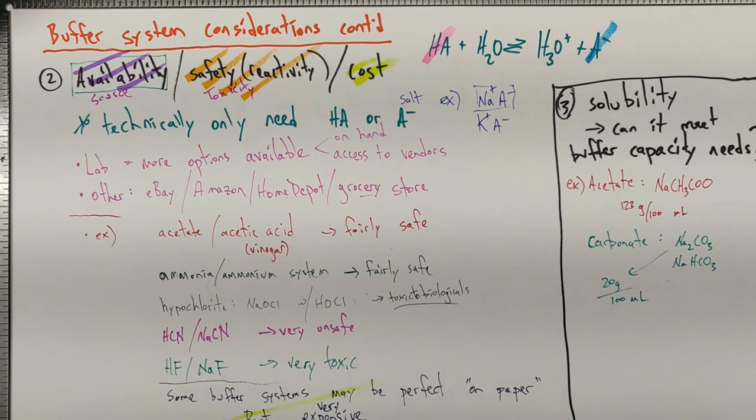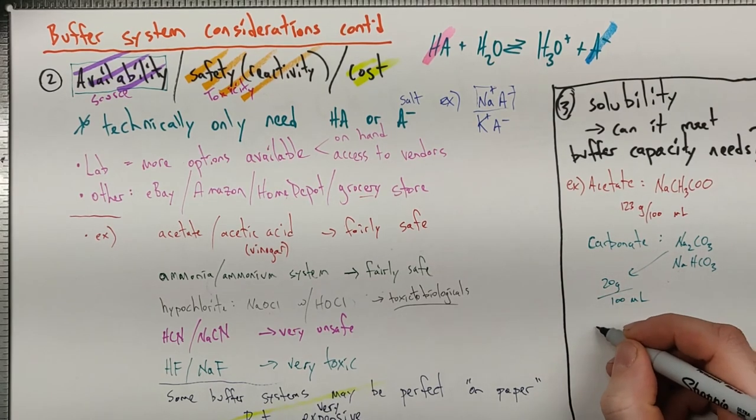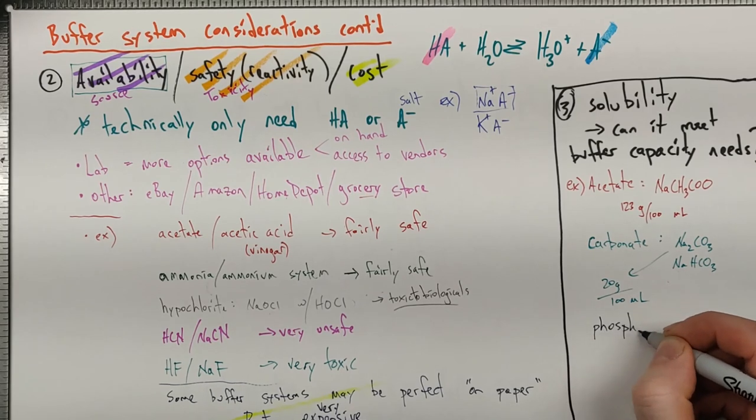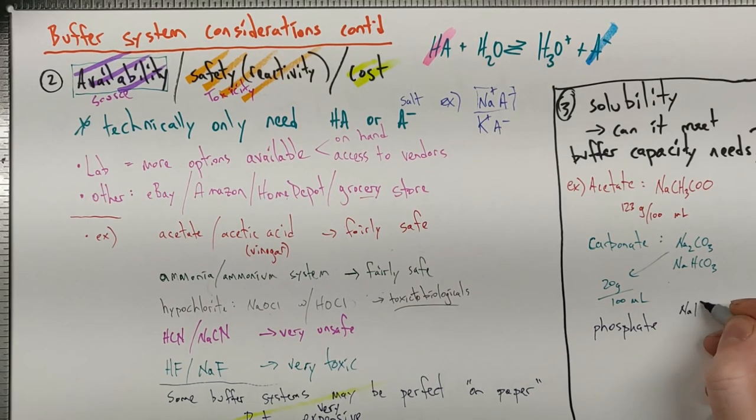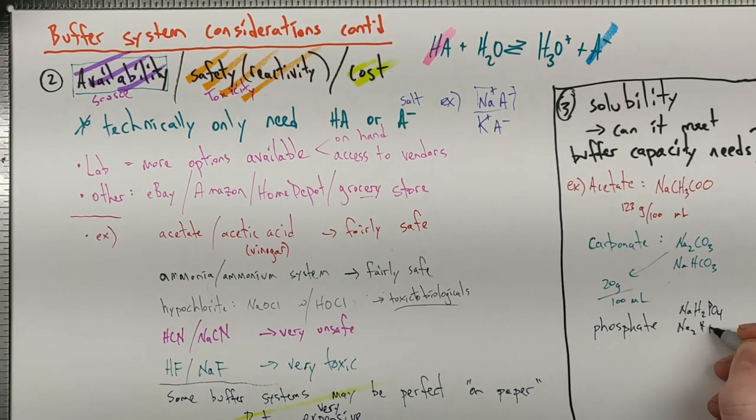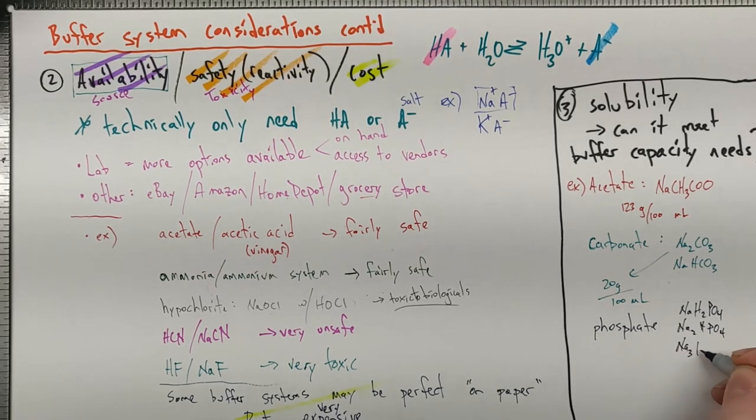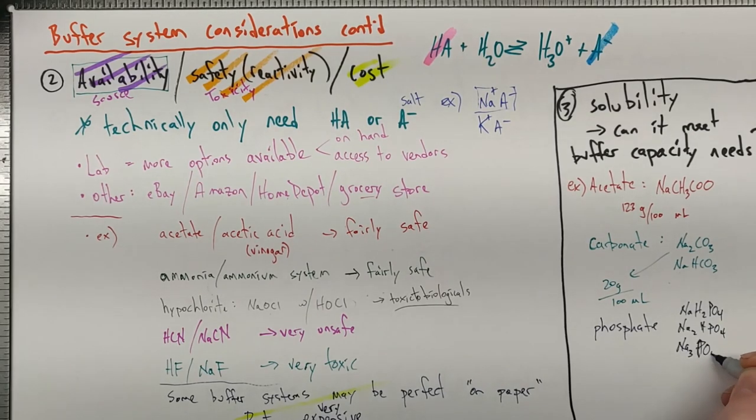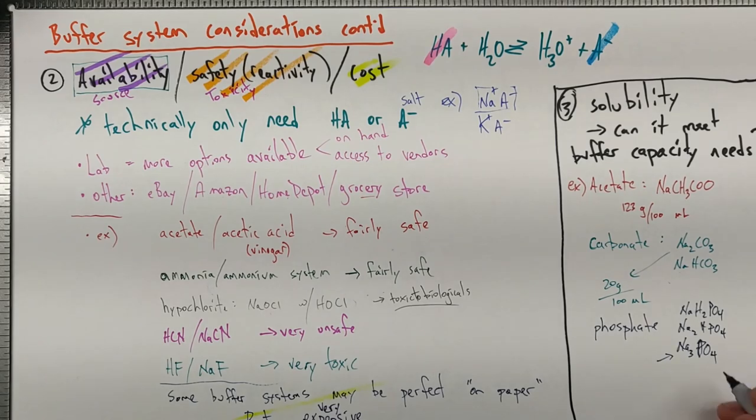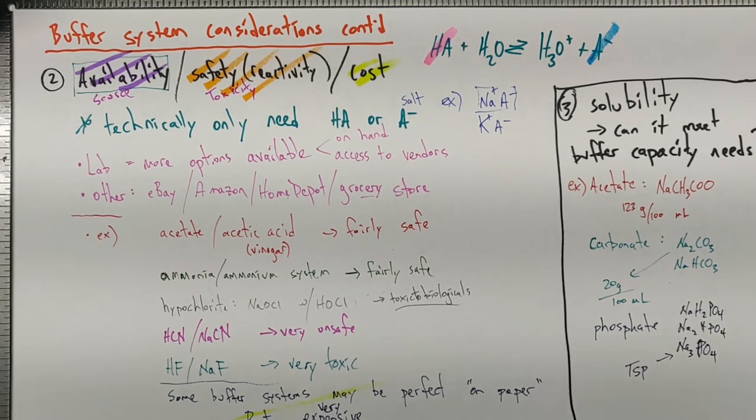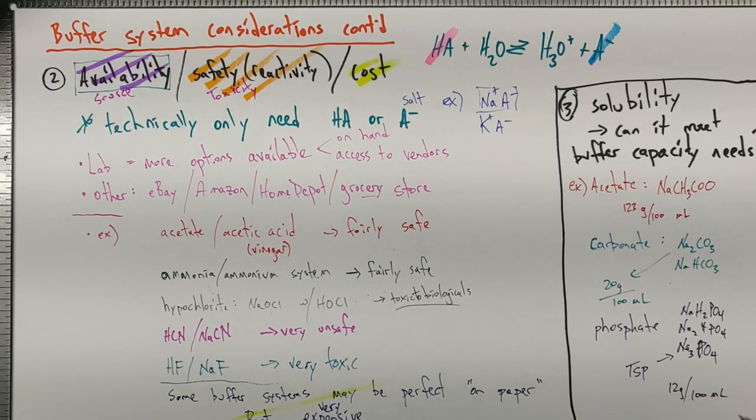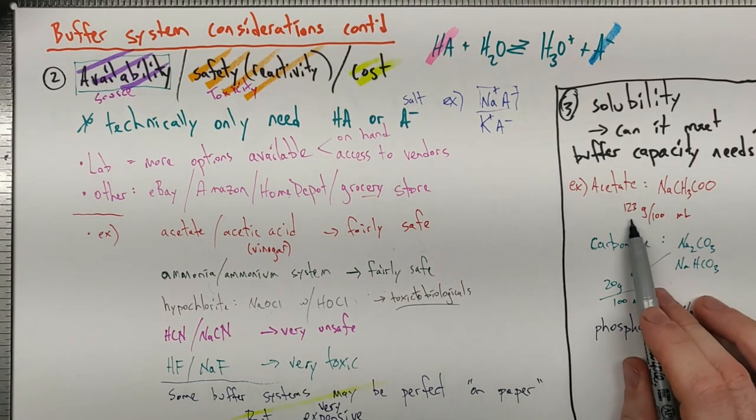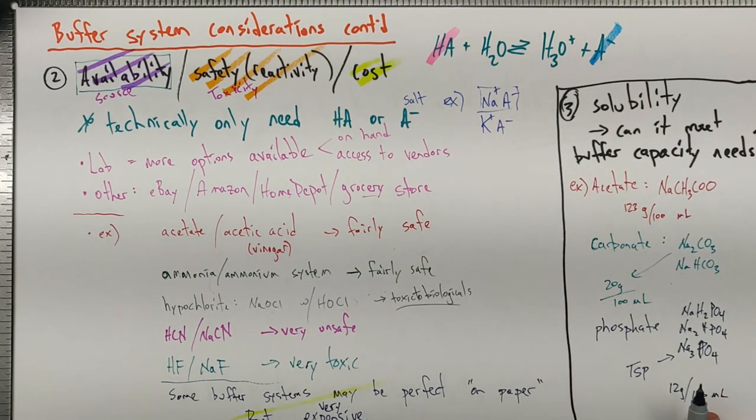Another cleaning product that you can buy at Home Depot and other places would be the sodium phosphate. With the phosphate, it's from phosphoric acid. You've got multiple options. You might have NaH2PO4, Na2HPO4, and Na3PO4. This one happens to be available as a commercial cleaning product, trisodium phosphate, TSP, if you look that up online. As we work our way down here, these phosphate buffers are less soluble, and that ends up around 12 grams per 100 milliliters, which is a very low molar concentration. That's a limitation with that. Can it do what you need it to do?